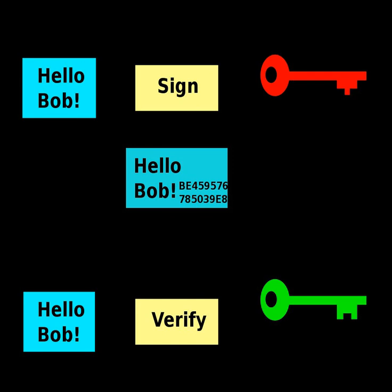Digital signatures employ asymmetric cryptography. In many instances they provide a layer of validation and security to messages sent through a non-secure channel. Properly implemented, a digital signature gives the receiver reason to believe the message was sent by the claimed sender. Digital seals and signatures are equivalent to handwritten signatures and stamped seals. Digital signatures are equivalent to traditional handwritten signatures in many respects, but properly implemented digital signatures are more difficult to forge than the handwritten type. Digital signature schemes are cryptographically based, and must be implemented properly to be effective.